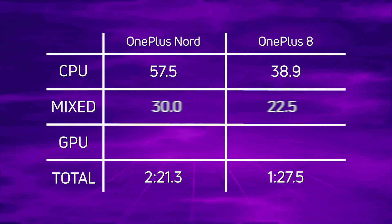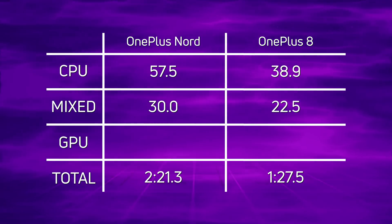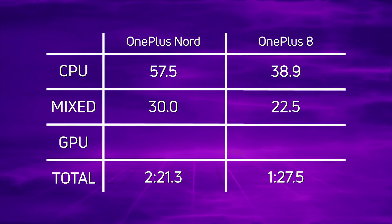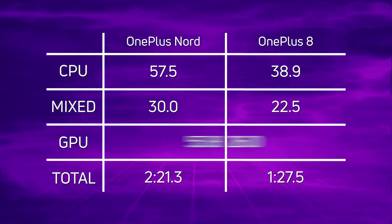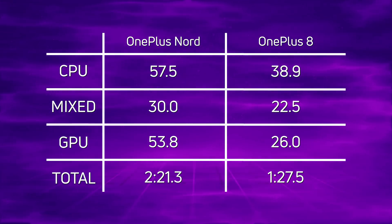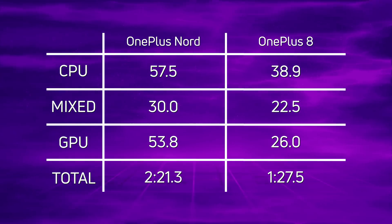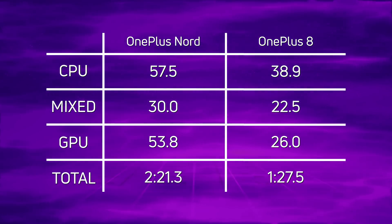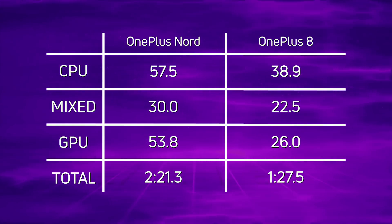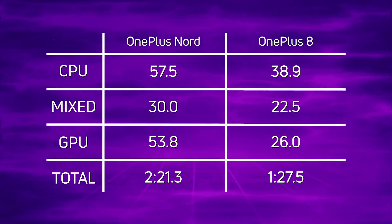In the mixed CPU/GPU section, the OnePlus Nord took 30 seconds versus 22.5 for the OnePlus 8 — a difference of 7.5 seconds. In the GPU section, the scores were 53.8 seconds versus 26 seconds — a difference of 27.8 seconds, more than double the time. Adding up all those wins for the OnePlus 8, it's a decisive win by over 53 seconds.